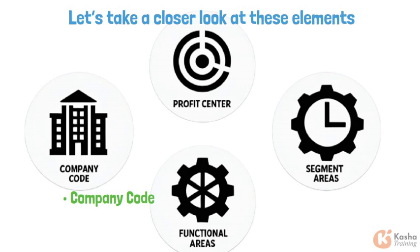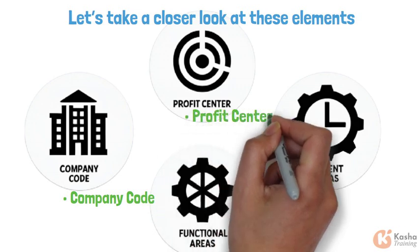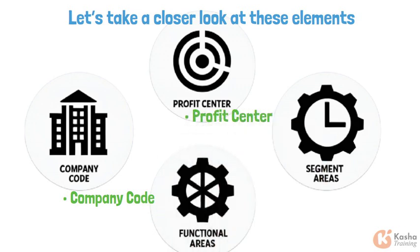Company code: this is crucial as it allows for the creation of financial statements like balance sheets and profit and loss statements for each legal entity within the organization. Profit center: this unit helps in internal reporting by tracking revenues and expenses by specific areas of responsibility, such as departments or geographical locations. Segment reporting: segments are vital for compliance with external reporting standards, ensuring that financial results are accurately presented.